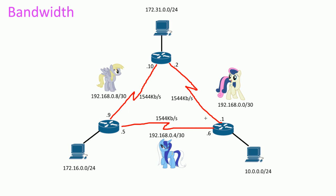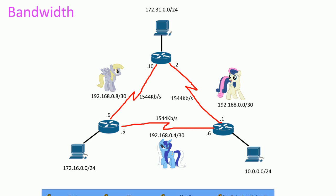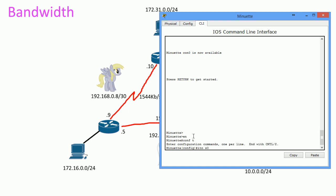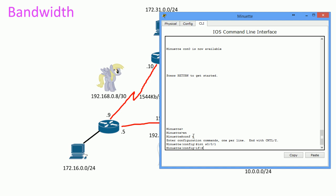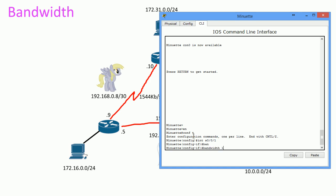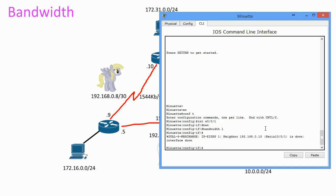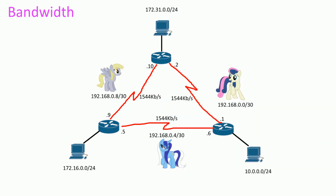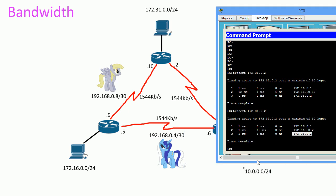Let's fix it. Now that we know what's going on, let's change this other interface to one kilobit as well. Go to the interface and set the bandwidth to one. The neighbor came up — everybody's happy.